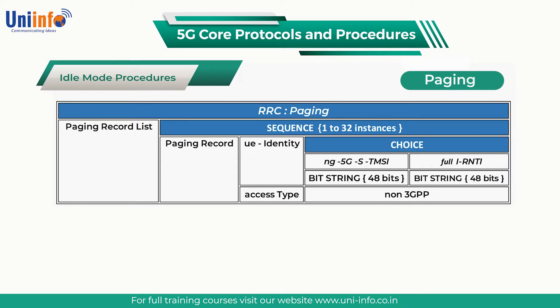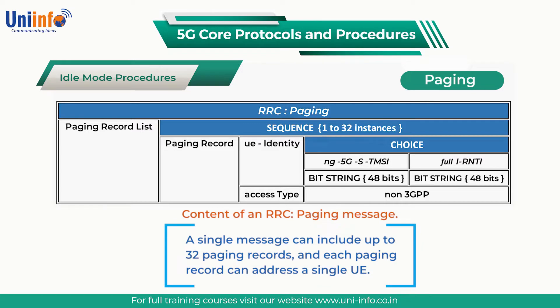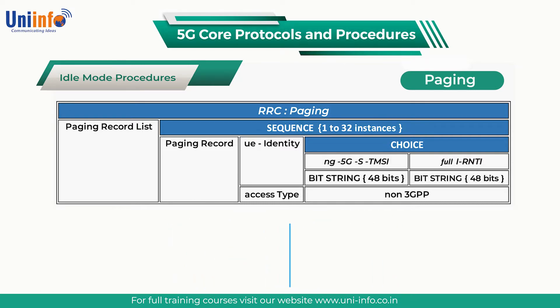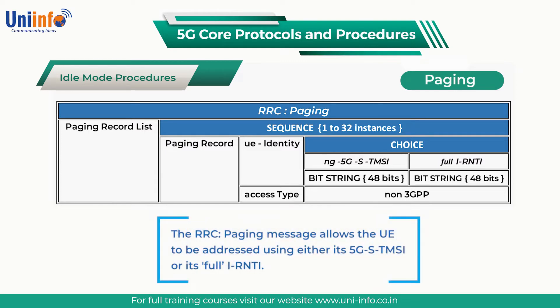The table on the screen presents the content of an RRC paging message. A single message can include up to 32 paging records, and each paging record can address a single UE. The RRC paging message allows the UE to be addressed using either its 5G-S-TMSI or its full I-RNTI.